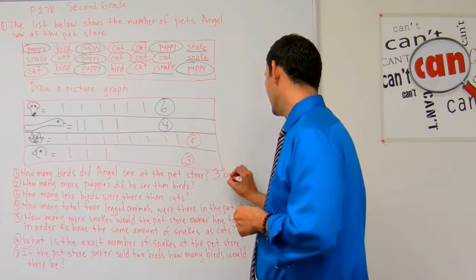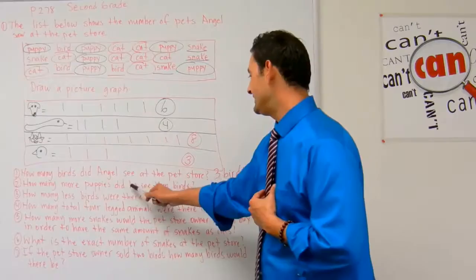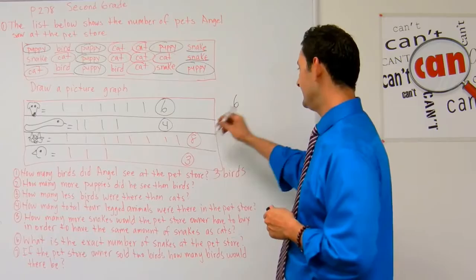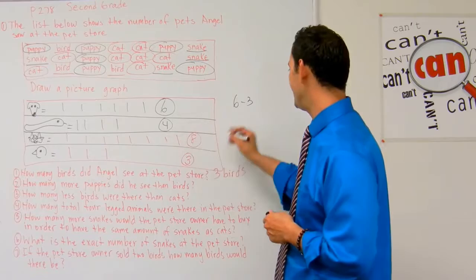Number two reads: how many more puppies did he see than birds? He saw six puppies and three birds. How many more puppies did he see than birds? He saw three more puppies.